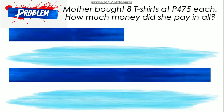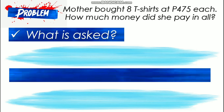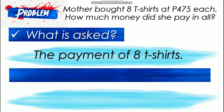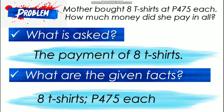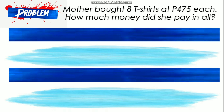The first question we need to answer is: what is asked in the problem? Look for the question. The question is about the payment for 8 t-shirts. Now we know what the problem is about. Next, let us identify the given facts — remember that given facts refer to the numbers in the problem. We have 8 t-shirts and 475 pesos each. Put a label on the given numbers.